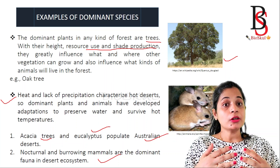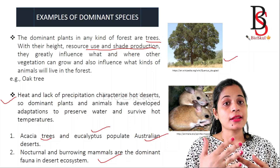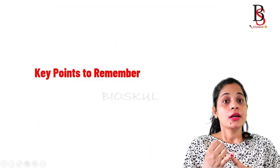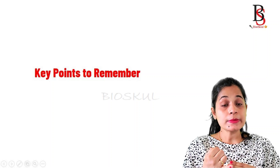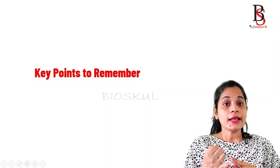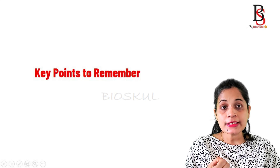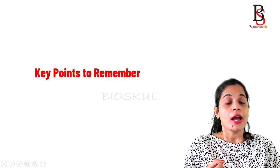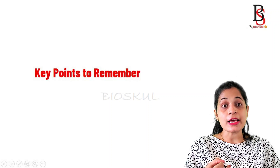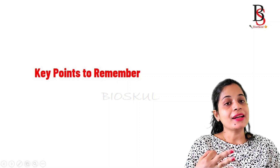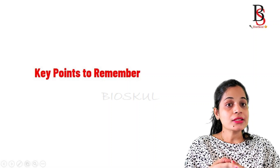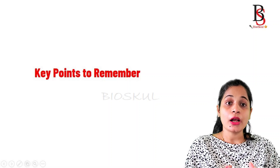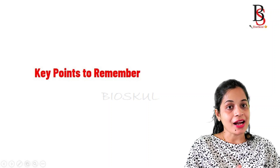The dominant species are those whose abundance is greater in the ecosystem and they control the population of other species. The learning points of today's lecture: first, umbrella species — by protecting the umbrella species we protect other species in the ecosystem. Second, flagship species — they act as ambassadors of the ecosystem and raise conservation concern. Third, indicator species — they indicate the condition of the environment. Fourth, dominant species — they have greater biomass and control other plants and animals in the ecosystem.